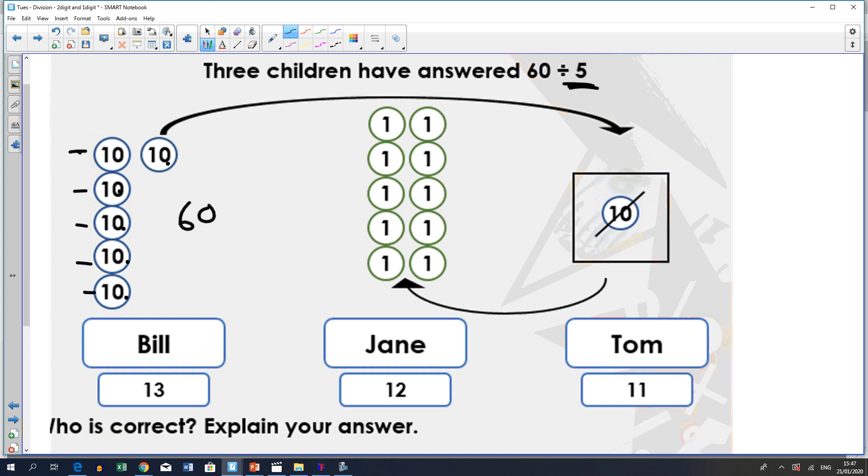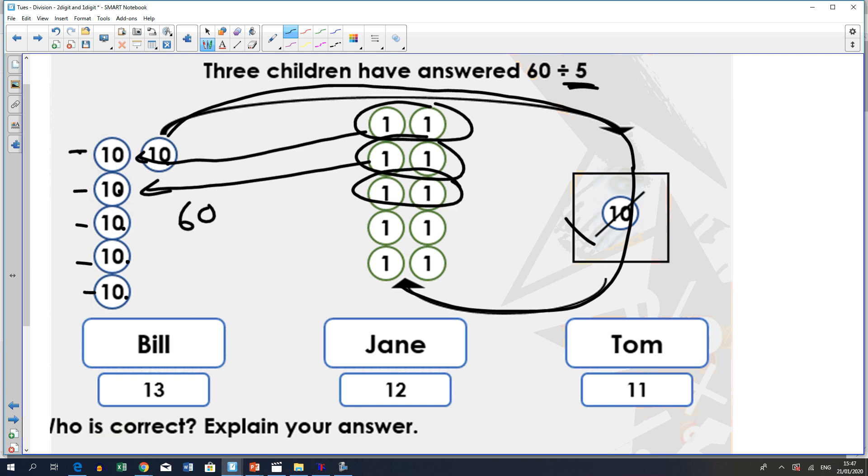So, what they've got to now do is they've got to exchange it. So, we don't want the 10. We want it to be in units. So, now we can then separate these out into our groups. So, then what we can then have is we can have 2 in each group. Does that work?